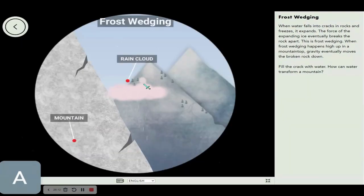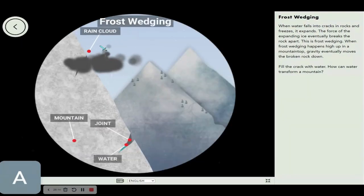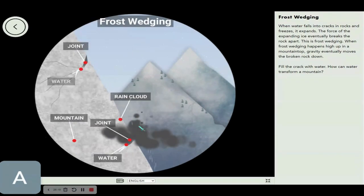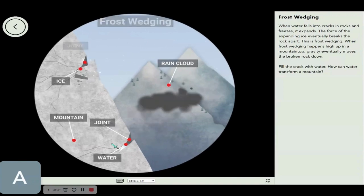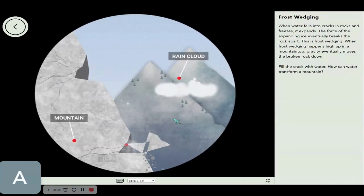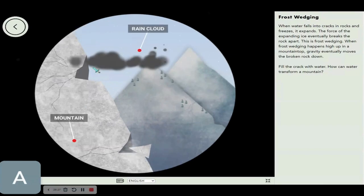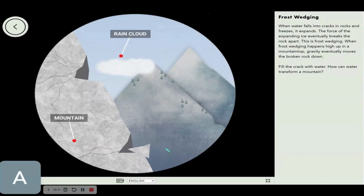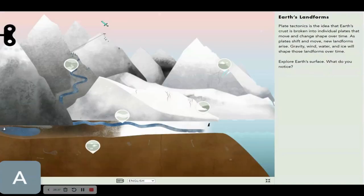Last but not least, frost wedging. Let's fill this up with water and look at what happens. Ice forms and carves out a huge chunk of rock. Seems like this rock is glitching.